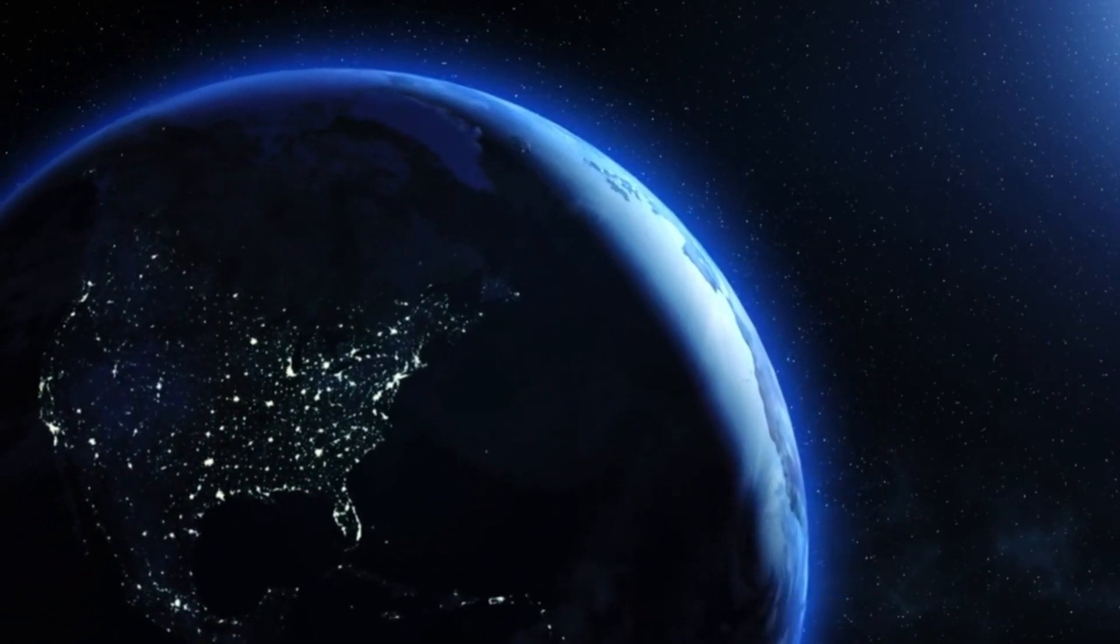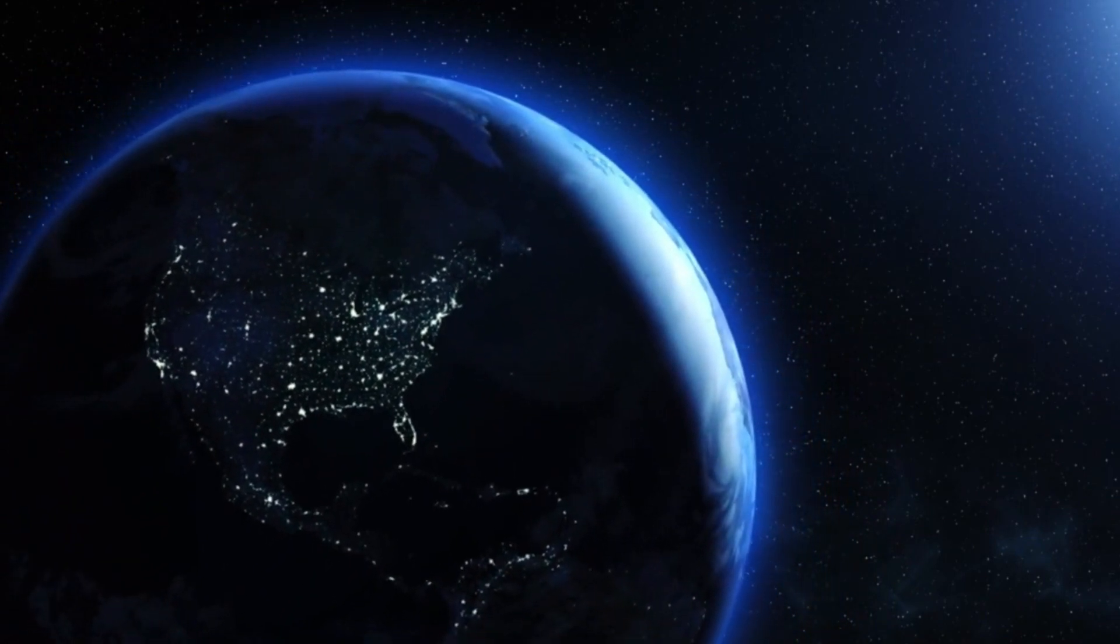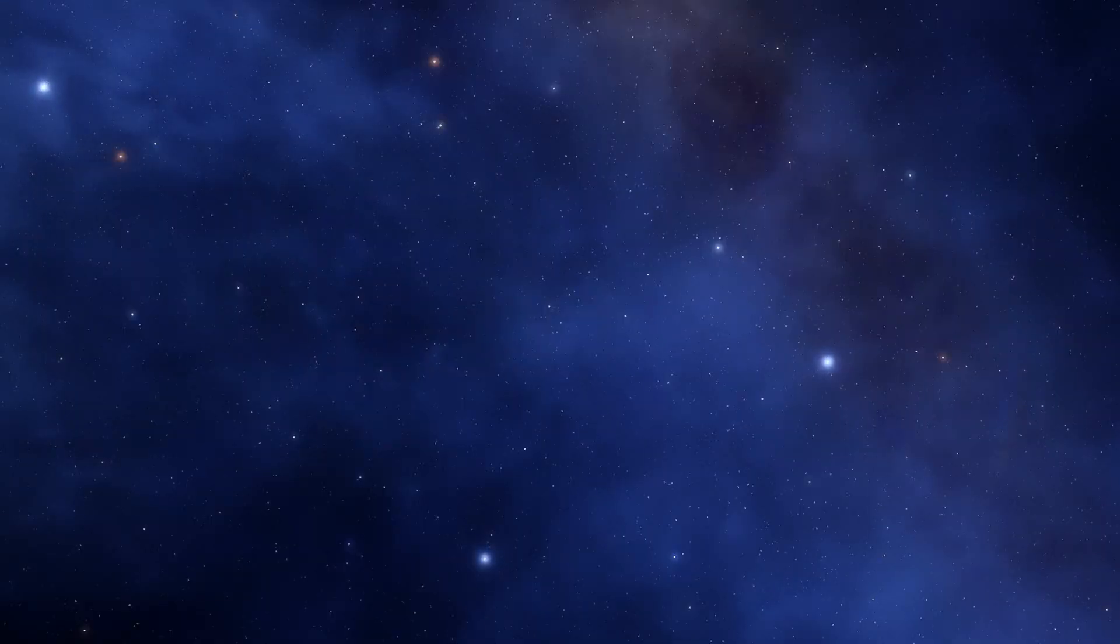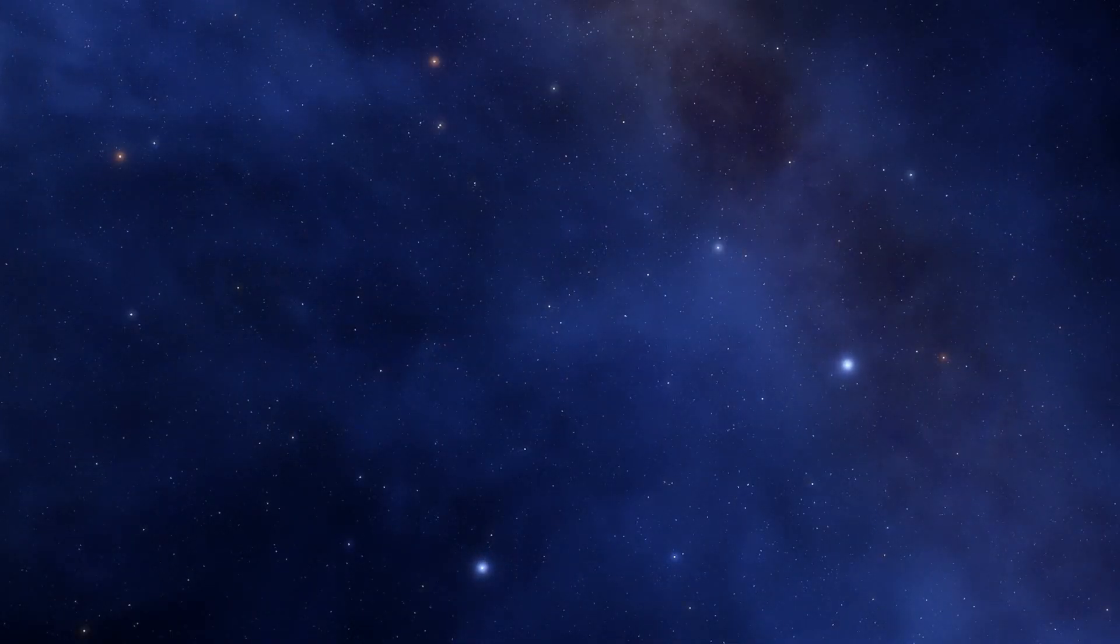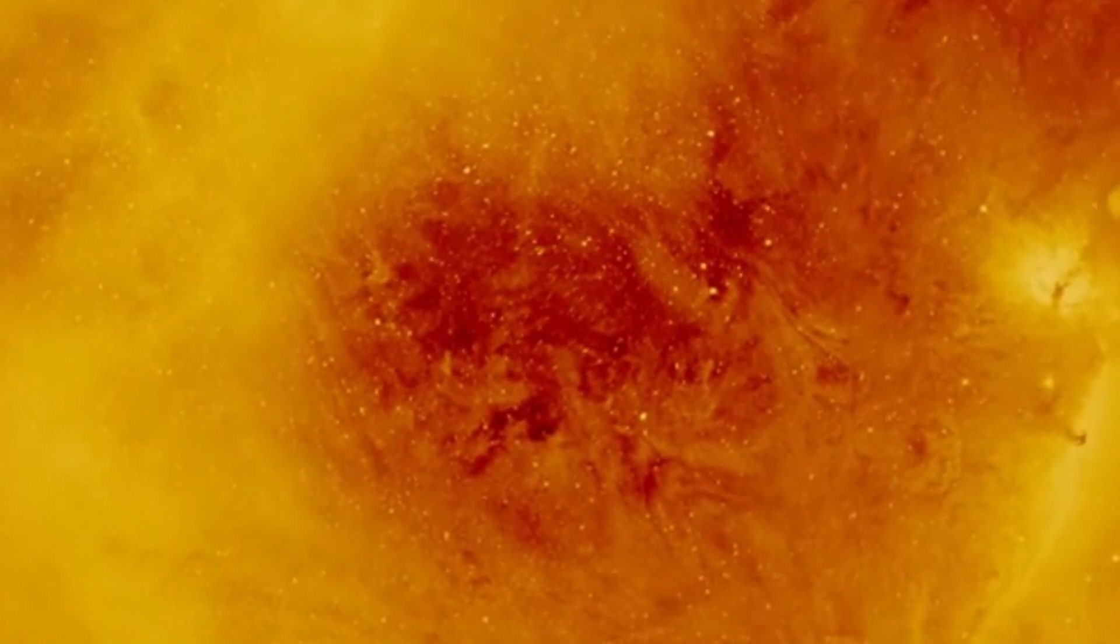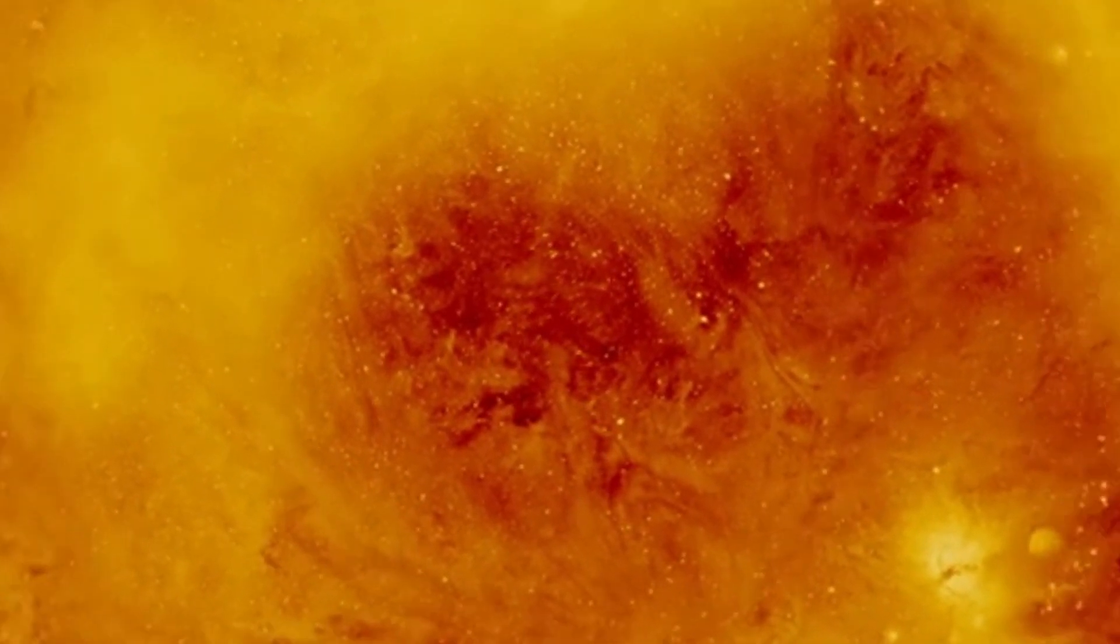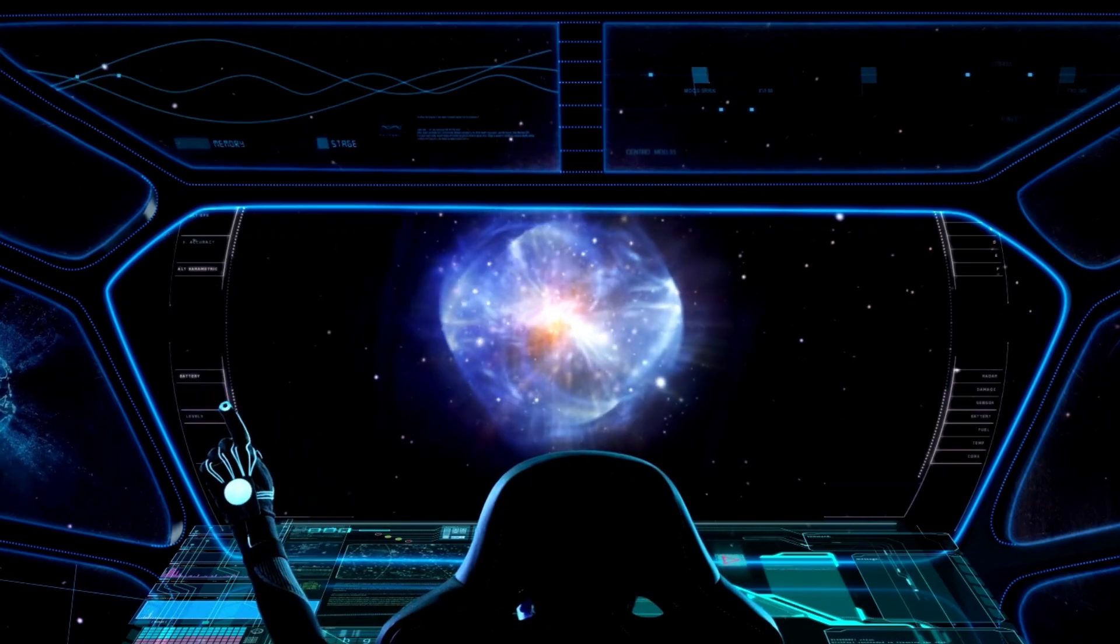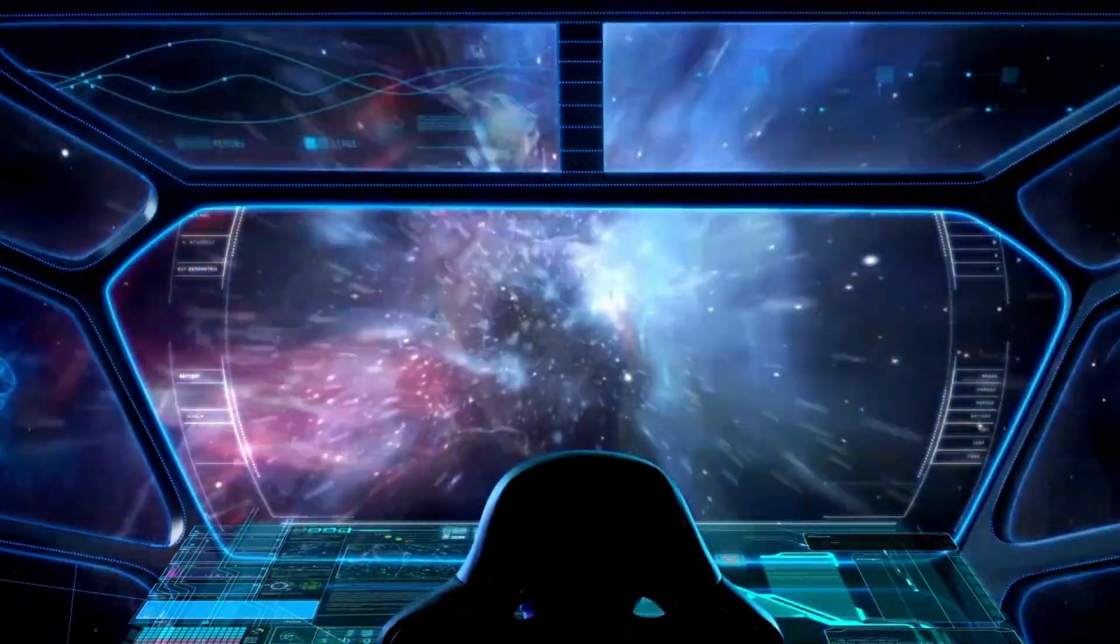The solar wind acts like an inflating balloon, forming something called the heliosphere. This is like a protective bubble around the solar system, carried by the solar wind. Eventually, this bubble gets stopped by pressure from interstellar matter, forming a boundary called the termination shock. The border between our solar system and interstellar space is known as the heliopause, estimated to be quite a distance away.